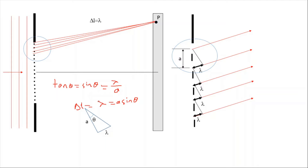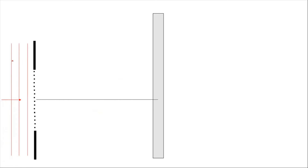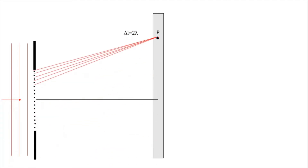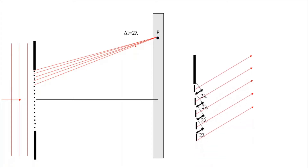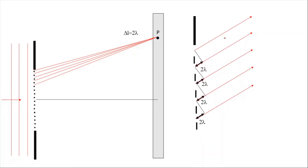Now let's look at path difference of two lambda. Light is again incident on the slits and we have another point P. Assume the path difference for these light rays is two lambda. If we enlarge it again, we have parallel light rays with path difference two lambda, two lambda, two lambda. Looking at this triangle, the slit separation is a and path difference equals two lambda.